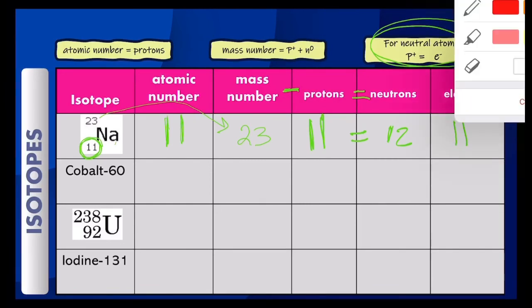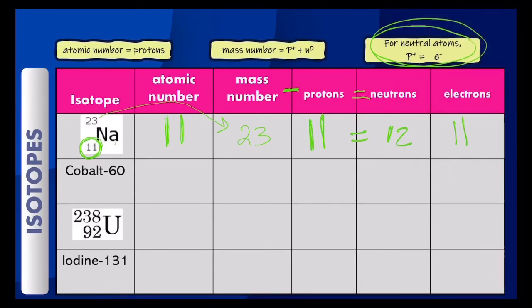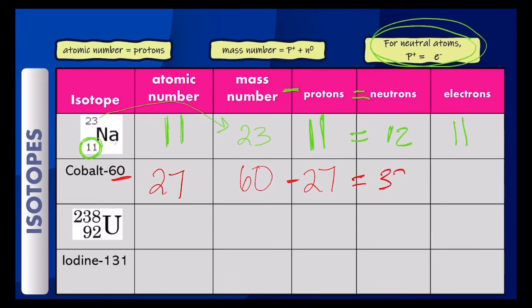Now let's take a look at cobalt. Cobalt's atomic number is 27, so it also has 27 protons. The 60 tells us that 60 is the mass number. To find the neutrons, subtract 60 minus 27, which gives you 33 neutrons. There is no negative symbol here — the dash in the isotope name is just a dash, not a negative sign. This is a neutral isotope of cobalt, so it's going to have the same number of electrons as protons: 27 electrons.